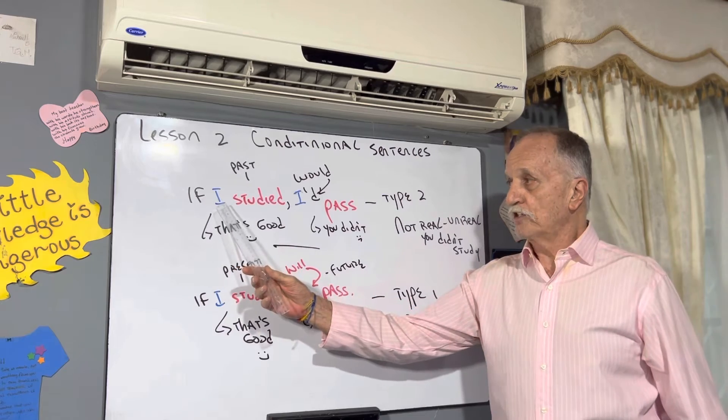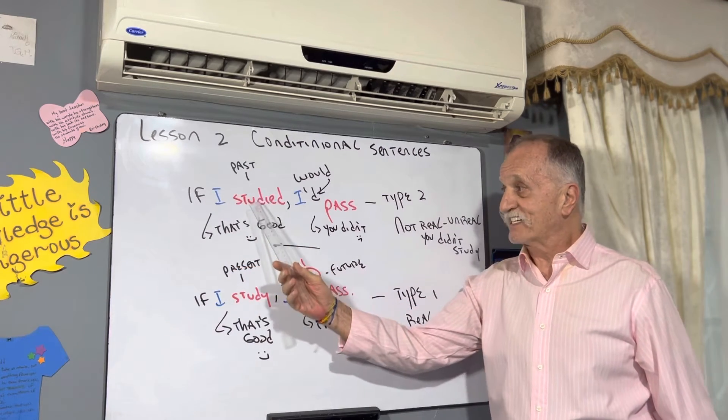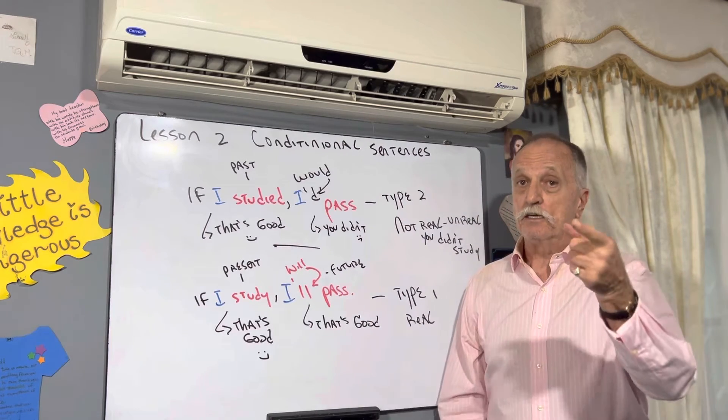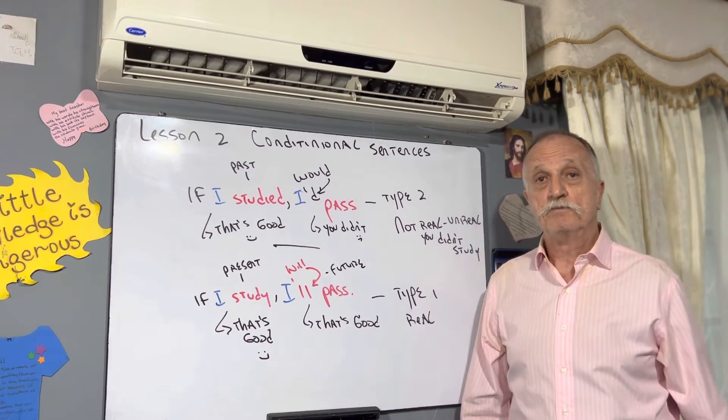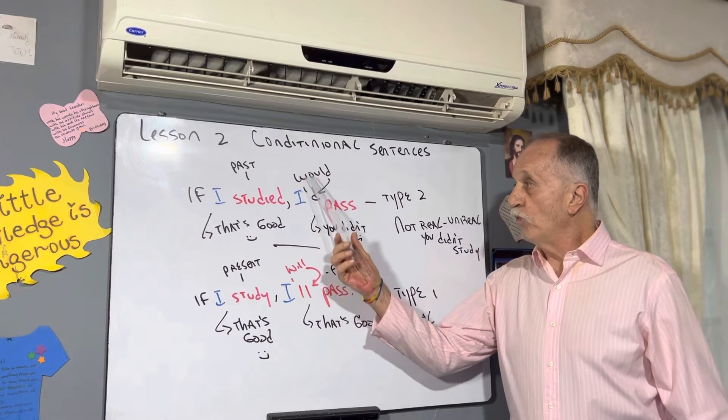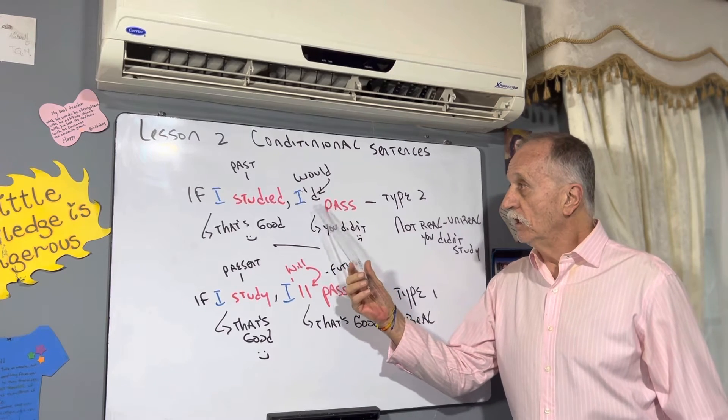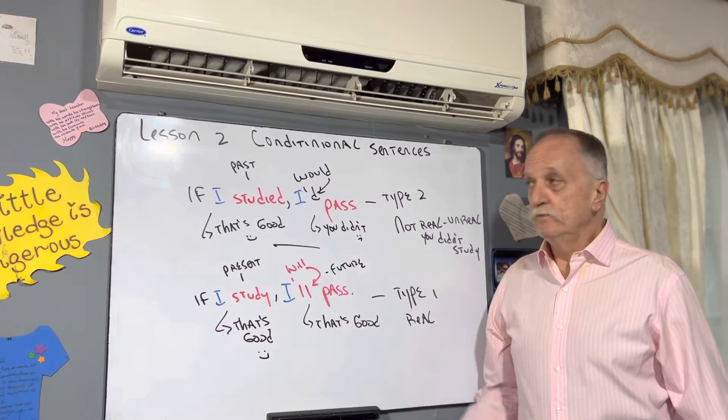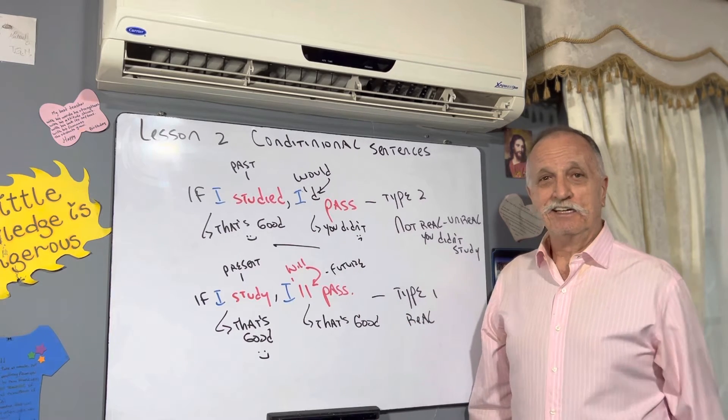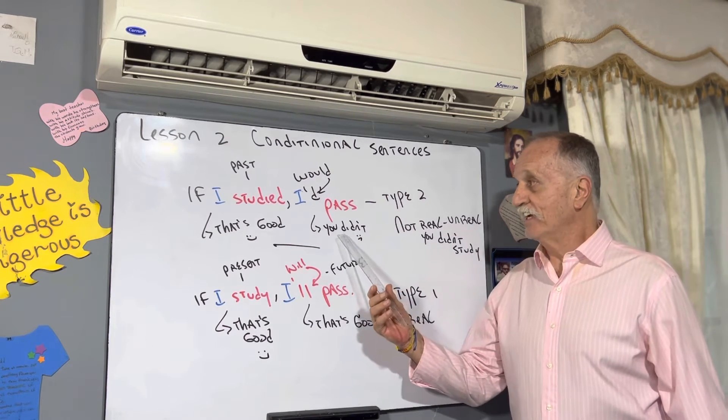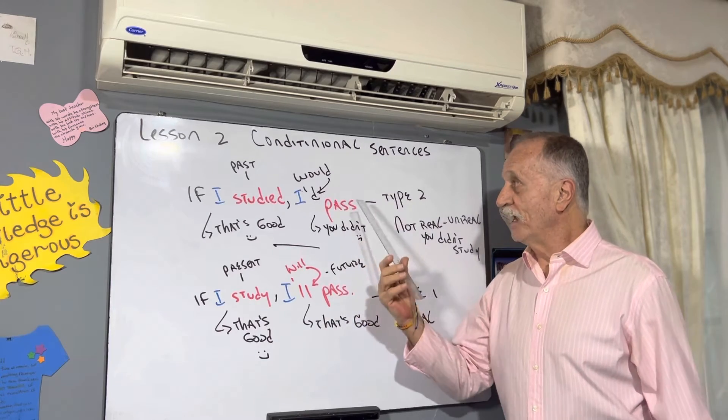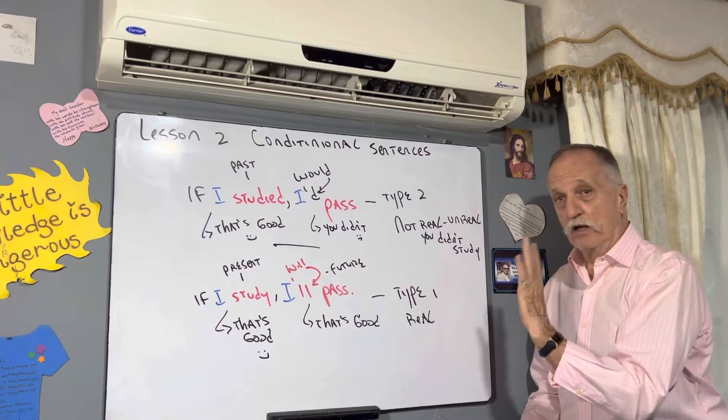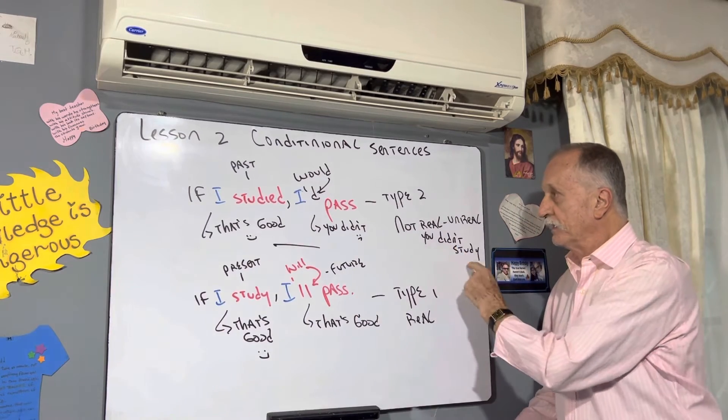If with a subject, and our verb is past now. If I studied in the past, that's good. If you studied, that's a good idea. I would pass - I with would. Oh, you didn't study. That's not good. You didn't. That's type two. That's not real, unreal, because you didn't study.